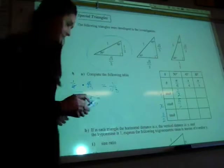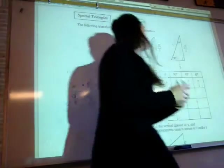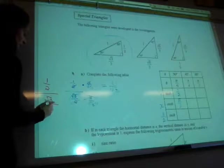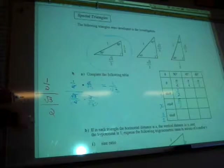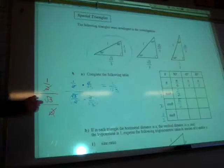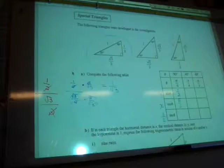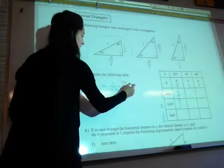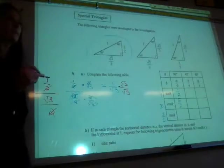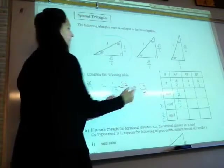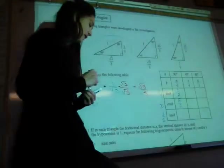Now let's look at a shortcut. 1 over 2 divided by root 3 over 2 — what happened to the 2s? They're both in the denominator, so they cancel out. We're left with 1 over root 3. Now the last thing: we have to rationalize. Multiply by root 3 over root 3, and we end up with root 3 over 3. So tangent 30 is root 3 over 3.